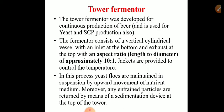Let us start with the tower fermenter. The tower fermenter was basically developed for continuous production of beer, and now it is also used for production of yeast, alcohol, single cell protein, etc. The tower fermenter consists of a vertical cylindrical vessel with an inlet at the bottom for substrate as well as oxygen, and exhaust at the top for escape of CO2. It has an aspect ratio of approximately 10:1, meaning the length-to-diameter ratio of the vessel is around 10. On the side of the vessel, jackets are provided for heating as well as cooling to control temperature.